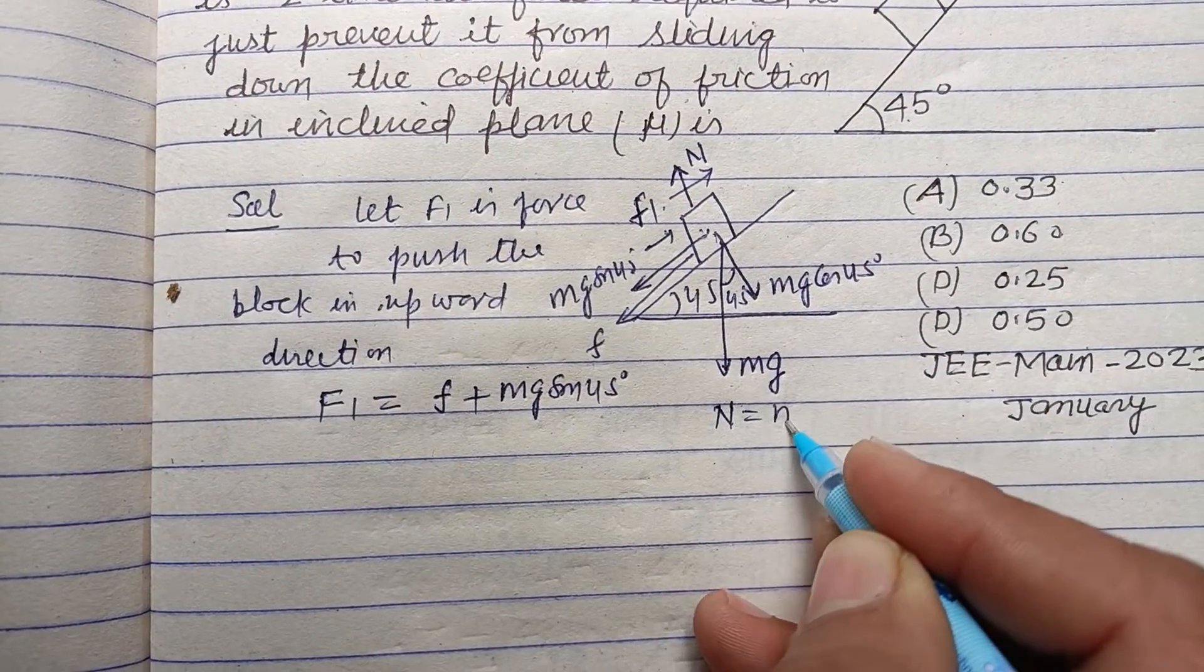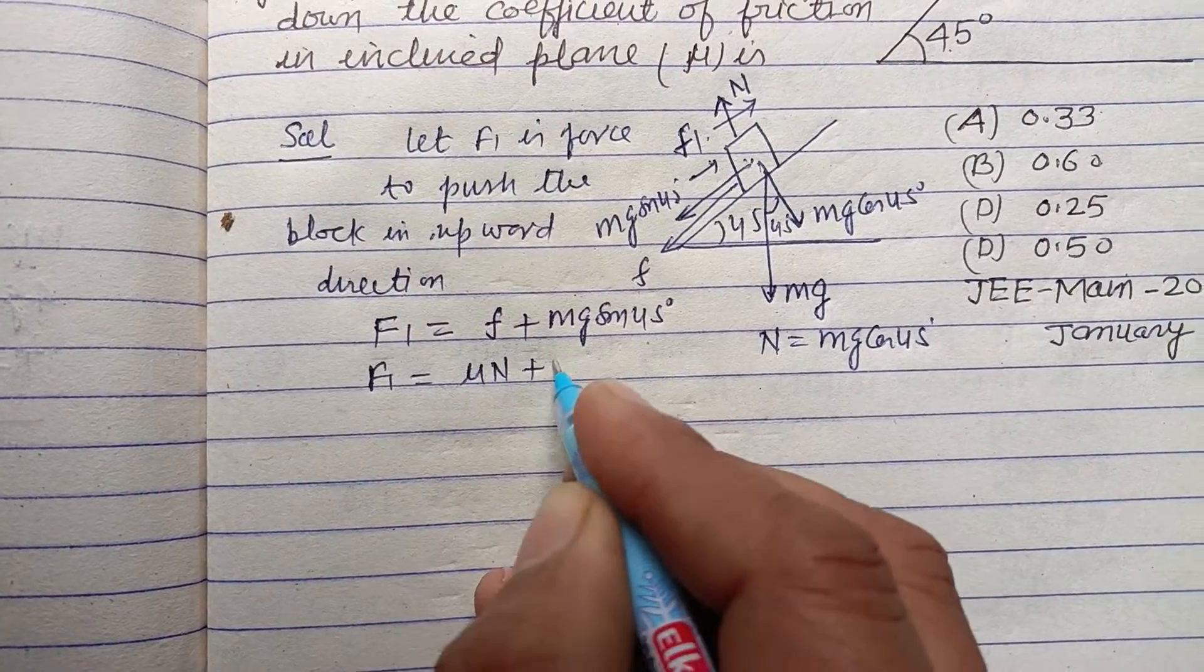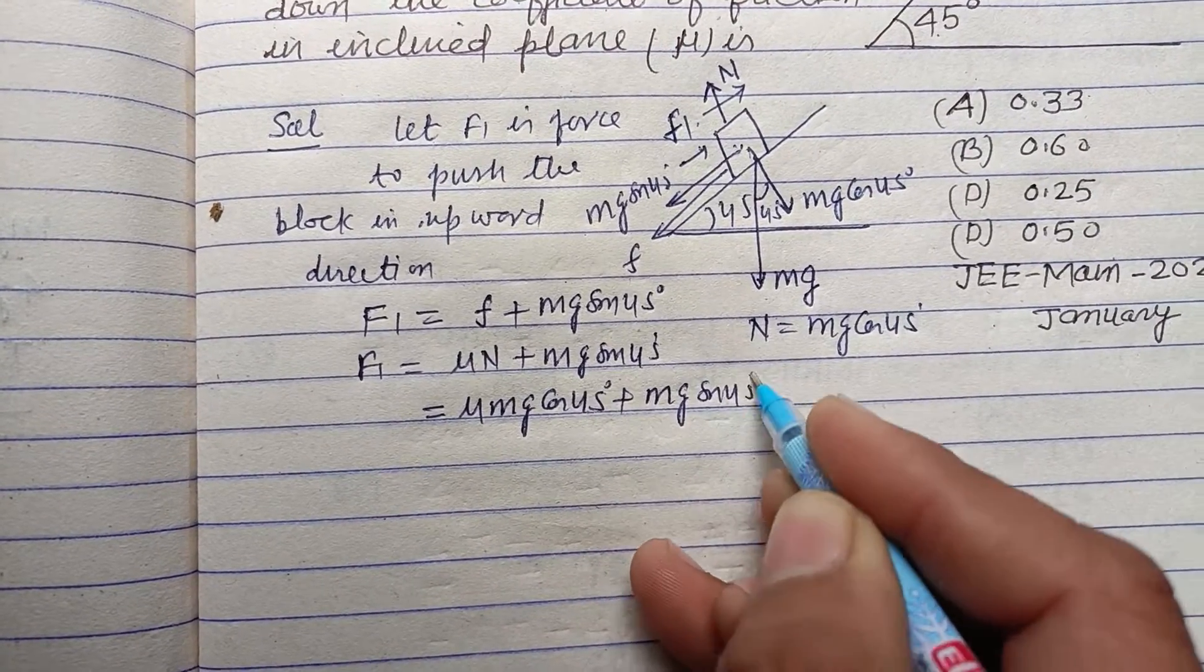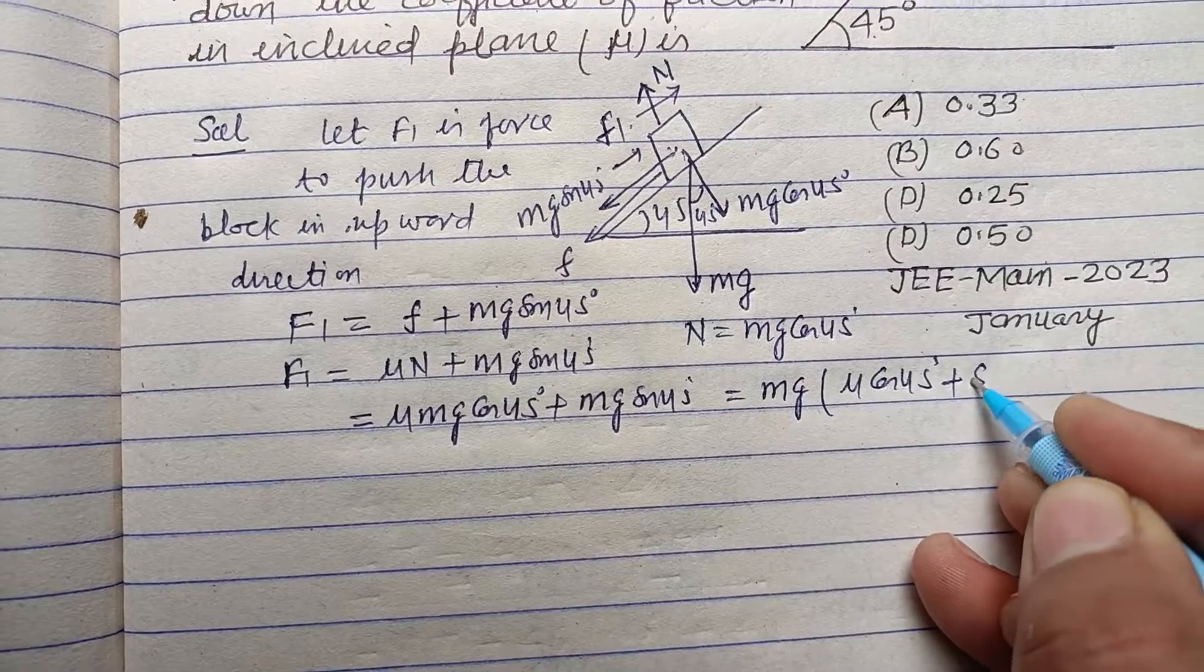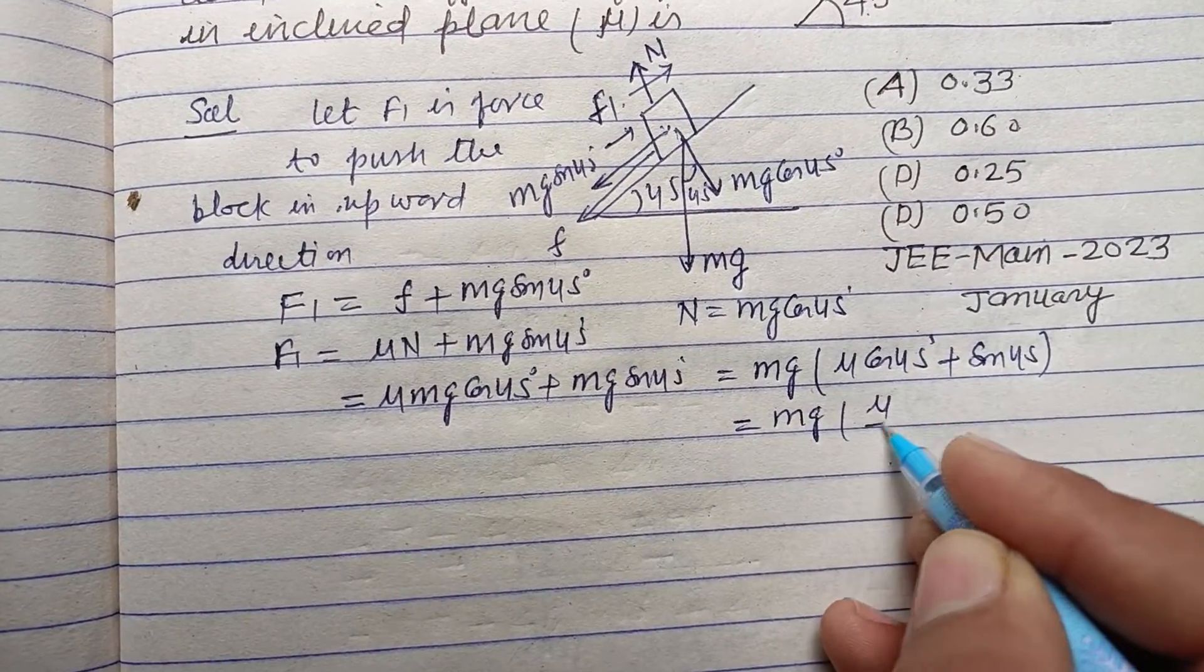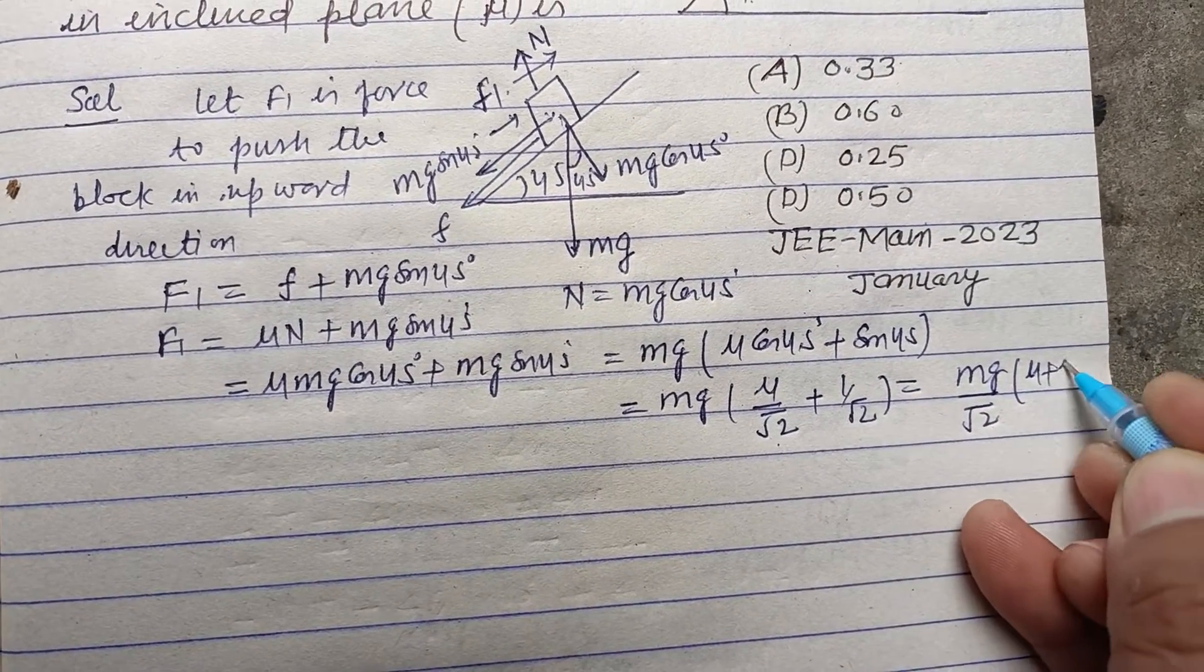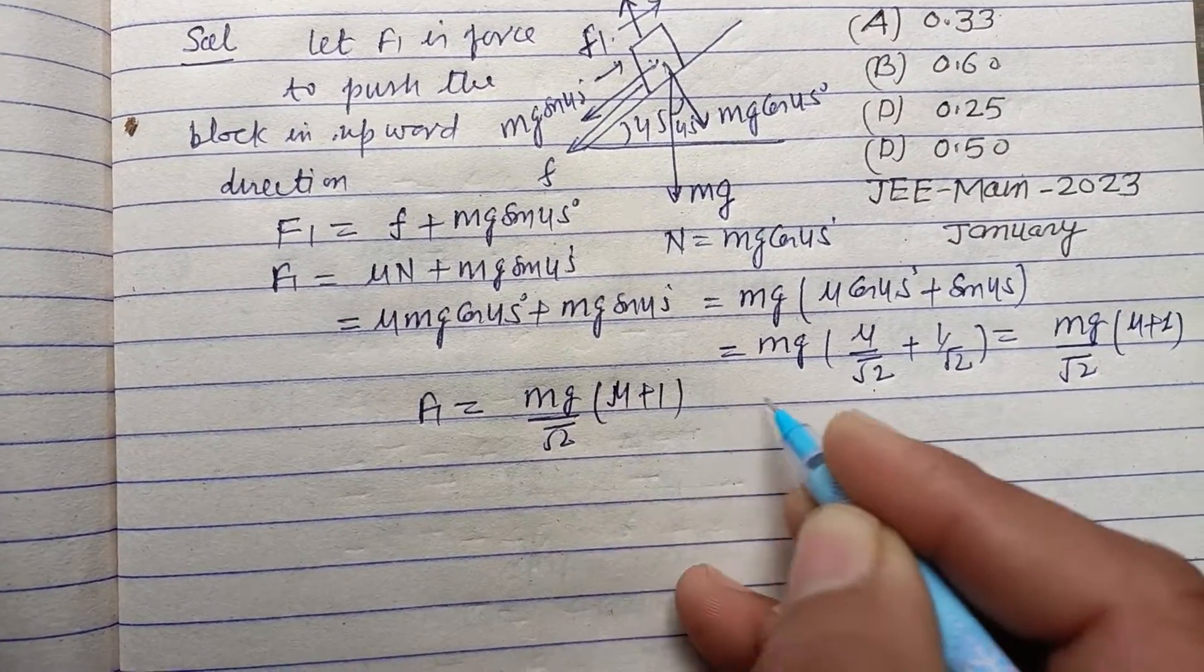Now putting value of N equals Mg cos 45 plus Mg sin 45, here Mg is common, so mu cos 45 plus sin 45. And you know the value of sin 45 and cos 45 is same, so this is mu. Value of cos 45 is 1 upon root 2, this is also 1 upon root 2. Therefore Mg upon root 2 into mu plus 1. So F1 is Mg over root 2 times mu plus 1. This is our first equation.